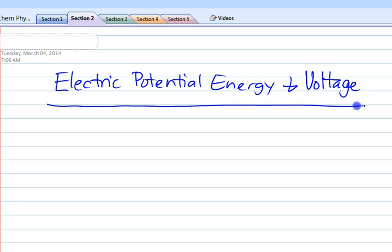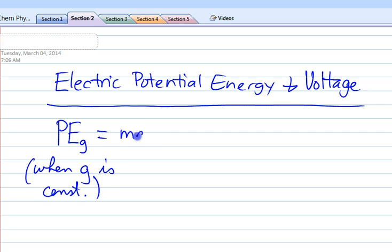I want you to think way back to last unit where we said that there were two ways to describe gravitational potential energy. There was the easy way, which was when the gravitational field g is constant, and that was MGH.